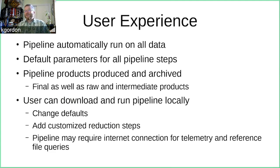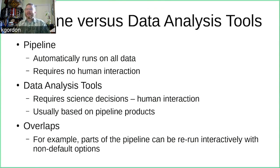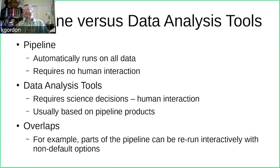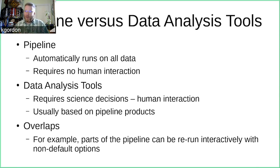What's the difference between the pipeline and data analysis tools? The pipeline runs automatically on all the data without requiring human interaction, so we can process all the data and keep up with it in real time. Data analysis tools generally require science decisions and hence human interaction — where you know something more about the data than an automated system and can tweak an algorithm or parameter. Most data analysis tools are based on pipeline products, though there are overlaps — for instance, when combining multiple exposures into a mosaic, there may be an interactive stage where you make decisions based on what you see.